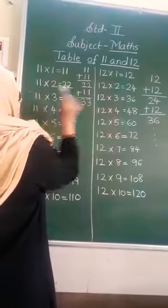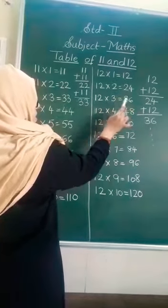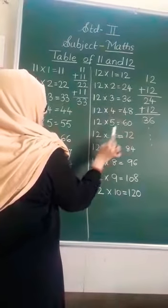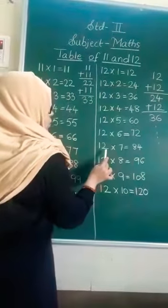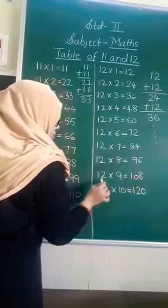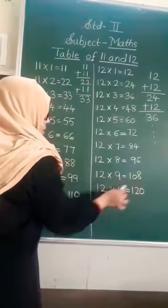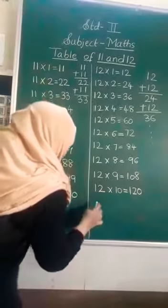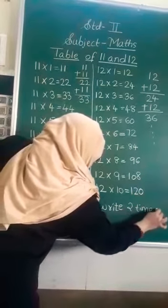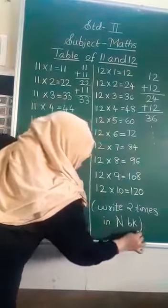Again we will recite the table of 12. 12 ones are 12, 12 twos are 24, 12 threes are 36, 12 fours are 48, 12 fives are 60, 12 sixes are 72, 12 sevens are 84, 12 eights are 96, 12 nines are 108, 12 tens are 120. Write the table 2 times in your notebook. Thank you.